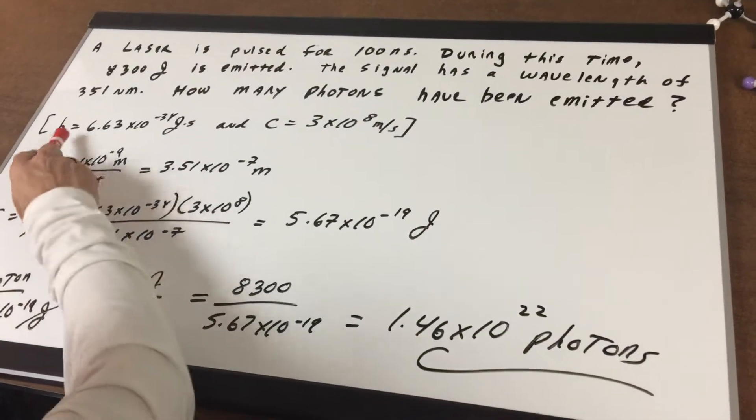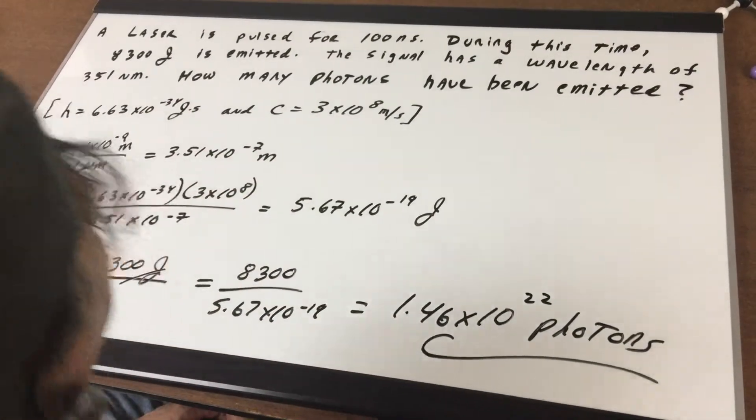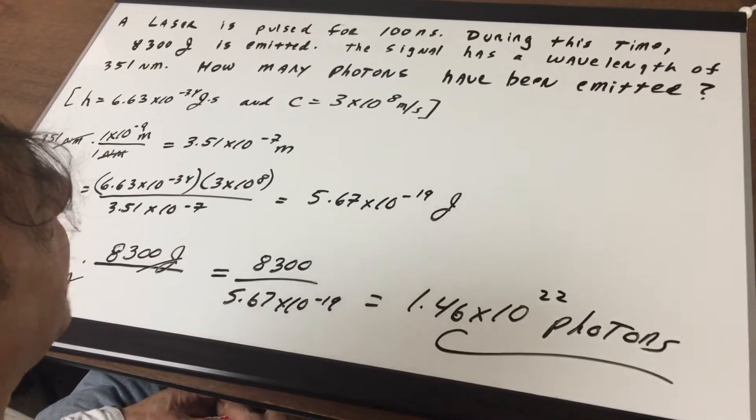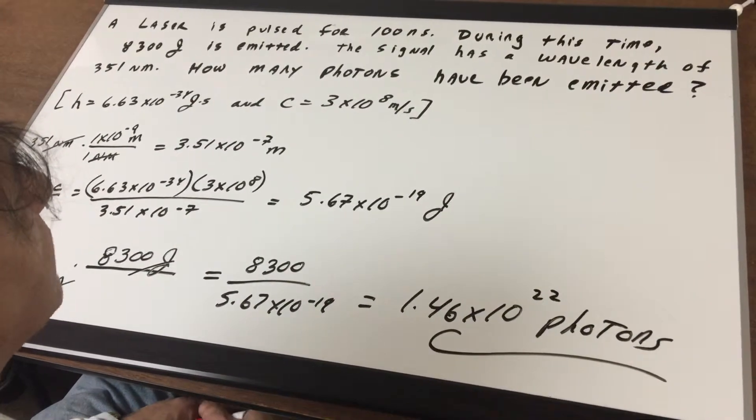And I give you the Planck's constant and I give you the speed of light. This is a hard question, so I'll even make you a deal: do this with a calculator, but I want you to make sure you understand the chemistry.